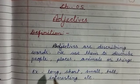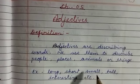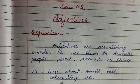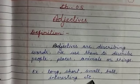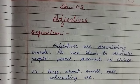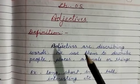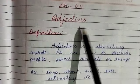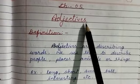For example, long, short, small, tall, interesting, etc. Thus, adjectives are nothing but describing words.